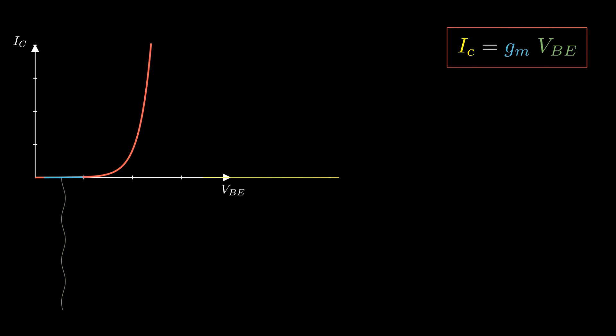But at each point in the curve we have a different slope. At the beginning of the curve and the lower values of VBE, the slope is almost zero and there is no output. At higher and higher values of VBE, the slope gets higher and higher and hence the output current gets bigger and bigger.